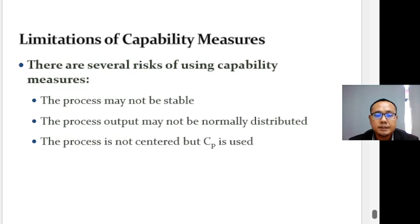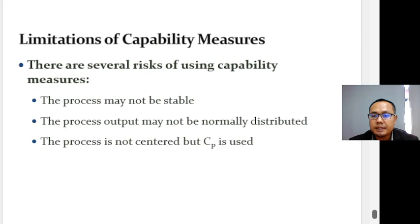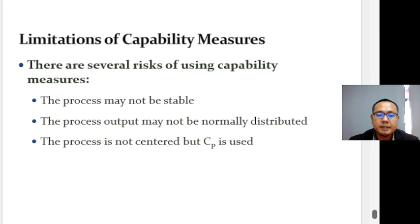There are several risks of using a capability index. The process may not be stable, in which case a capability index is meaningless. The process output may not be normally distributed, in which case inferences about the proportion of output that is acceptable will be incorrect. Also, the process may not be centered but the Cp index is used, giving a misleading result.